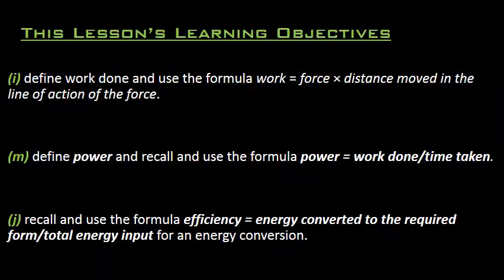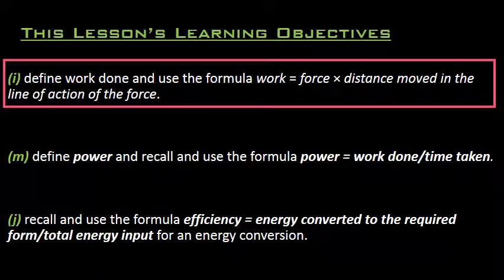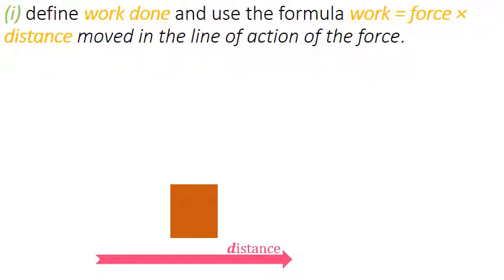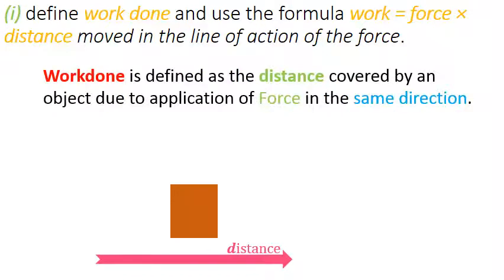In this lesson, the learning objectives we will be looking at are 3: I, M, and J. First, let's look at I. In this learning objective, we will define work done. Work done is defined as the distance covered by an object due to the application of force in the same direction.